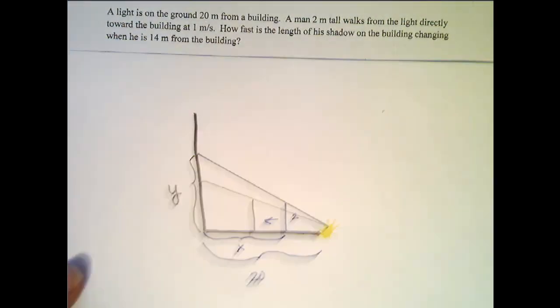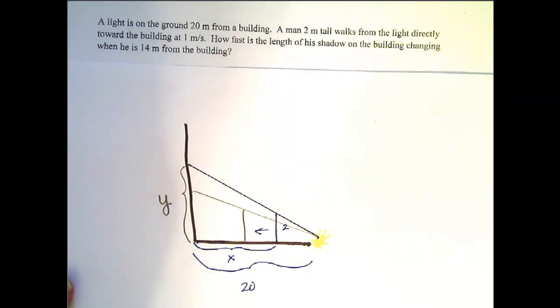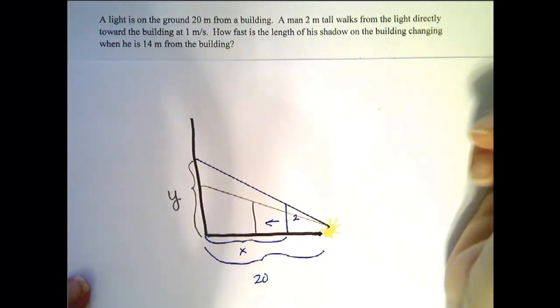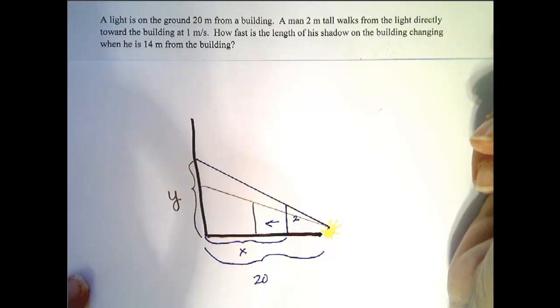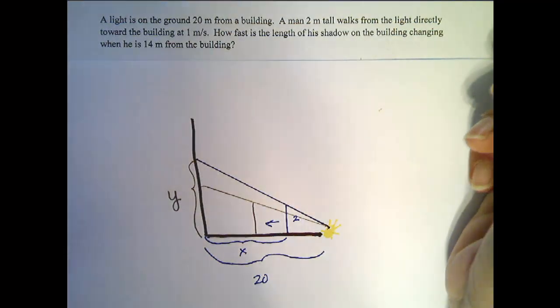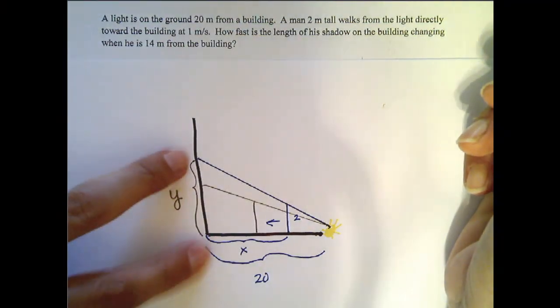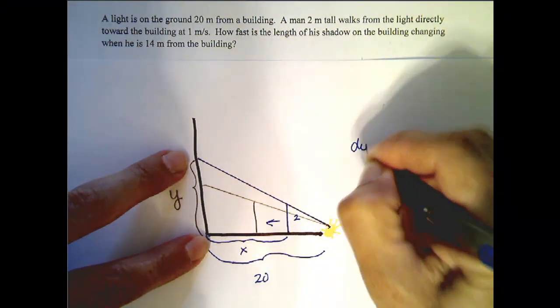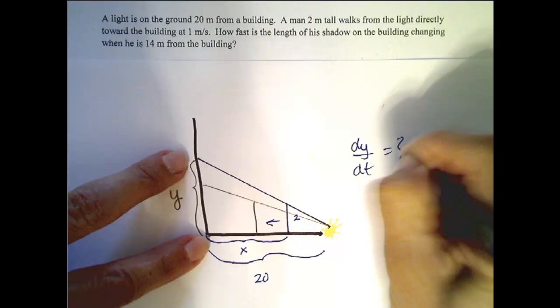Okay, so now that we have this picture, we've identified things that are changing and things that are not. Let's see what we are asked to find. How fast is the length of his shadow on the building changing? So it's asking for this, the rate of change of this shadow. So we are looking for dy/dt.